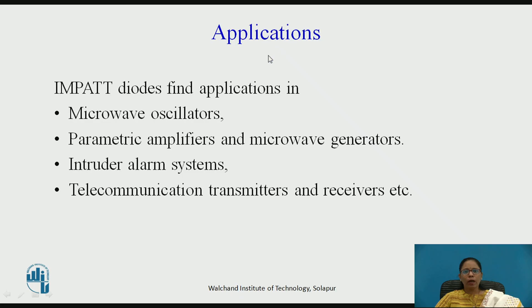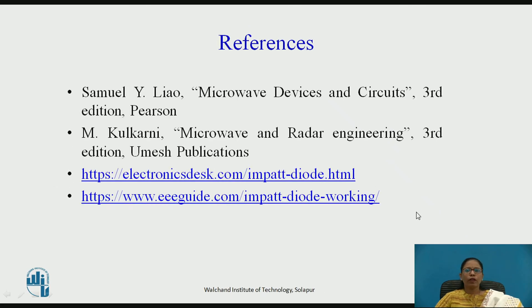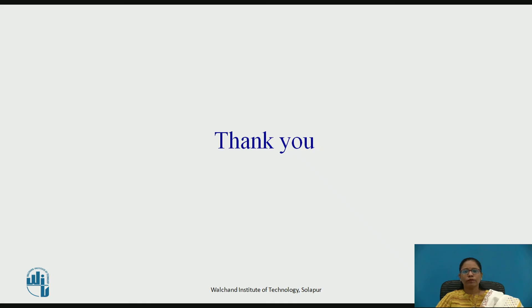The IMPATT diode finds applications in microwave oscillators, in parametric amplifiers and microwave generators, in intruder alarm systems, and in telecommunication transmitters and receivers. These are the references used for preparing this video. Thank you.